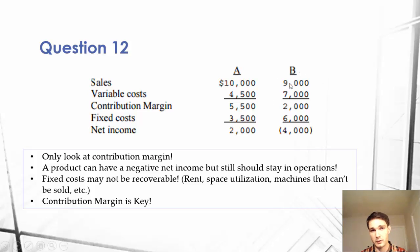A product can have a negative net income but should still stay in operations. This is what's so important with understanding this question. Fixed costs may not be recoverable. These $6,000 in fixed costs, we might not get that back. Maybe we're running all of these products out of the same warehouse. If we stop selling product B, even though it's making a negative net income because of the allocation of fixed costs, we will just lose out on the $6,000.